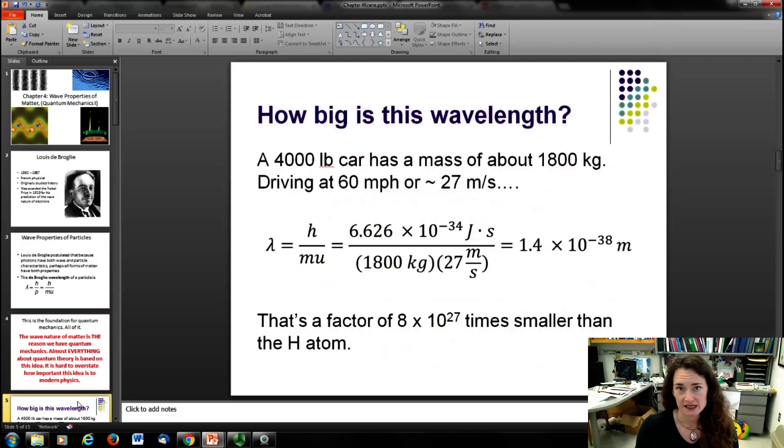Now the deal is, this wasn't noticed before this epoch, this time, because the wavelength is a really small value. For example, if you have a 4,000 pound car, you've got a mass of about 1,800 kilograms. And if you're driving at 60 miles per hour, that's about 27 meters per second. So plugging into de Broglie's equation, h over mu, you've got 6.626 times 10^-34 joule seconds divided by 1,800 kilograms divided by 27 meters per second.